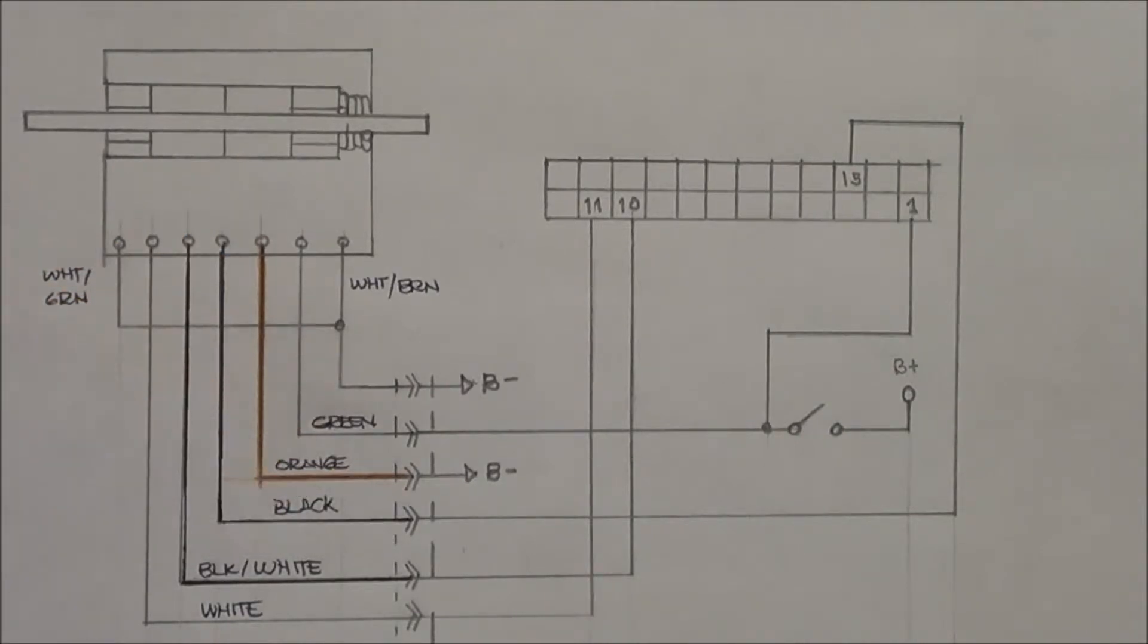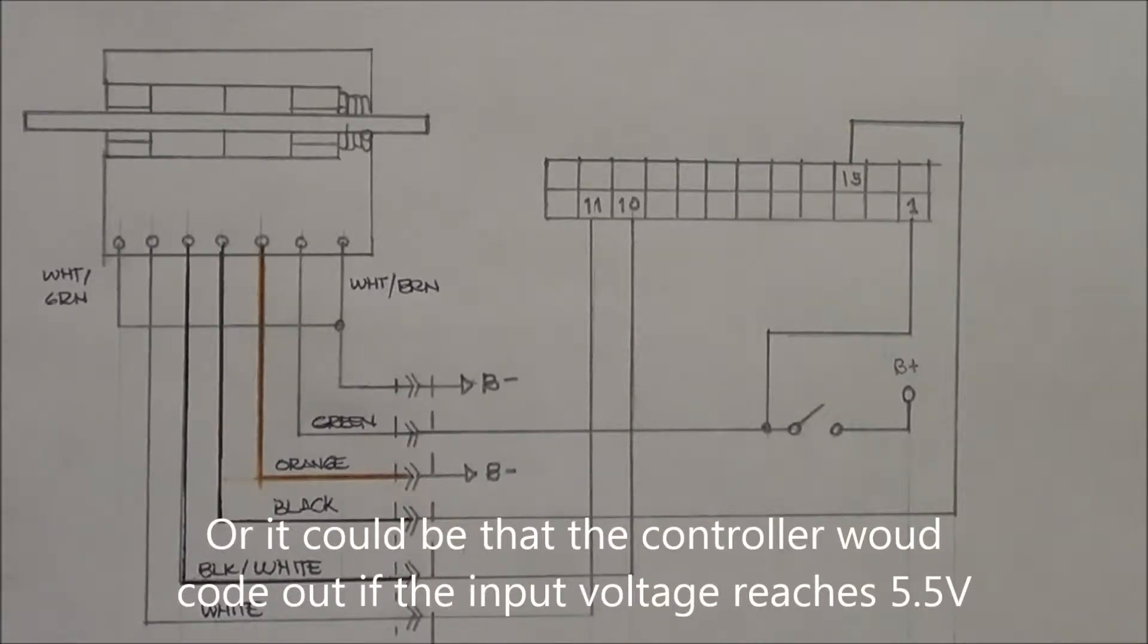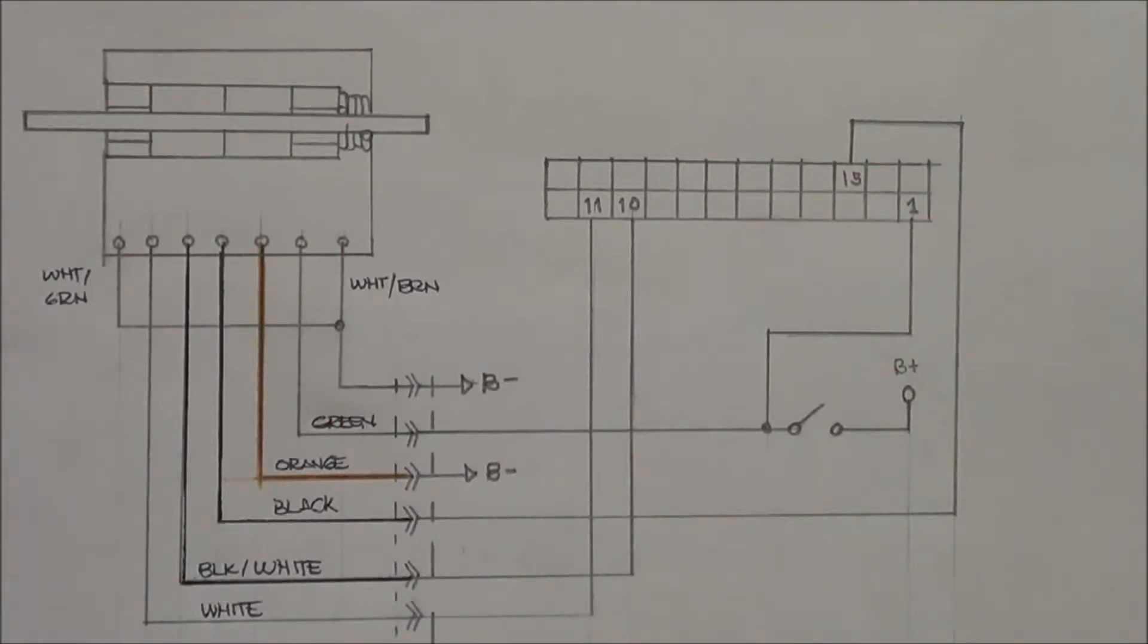So when I was reading up the manual, the manual said that the maximum throttle fault would be at 5.5. So the way I understand it is that if you go beyond 5.5, then the controller is going to sense that there is a fault in the circuit.